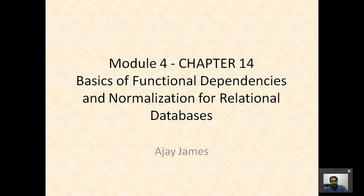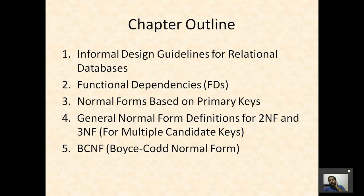Module 4 is covered in chapter 14.1 to 14.5 of Navathe 7th edition and chapters 15.1 and 15.2 of the same book. In this lecture we'll be dealing with informal design guidelines for relational databases, then functional dependencies, normal forms based on primary keys, and general normal form definitions for second normal form, third normal form, and BCNF.